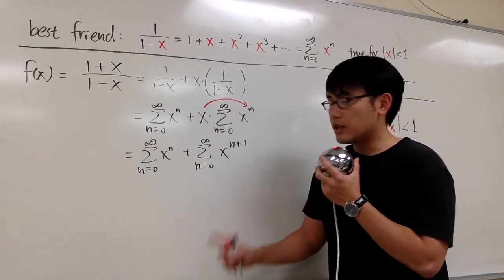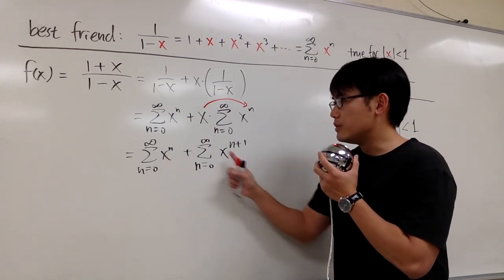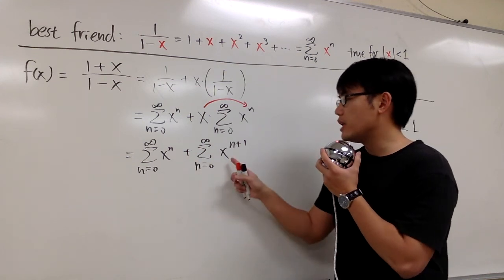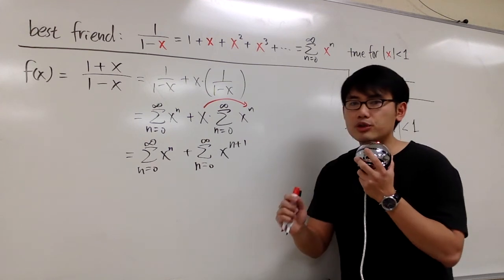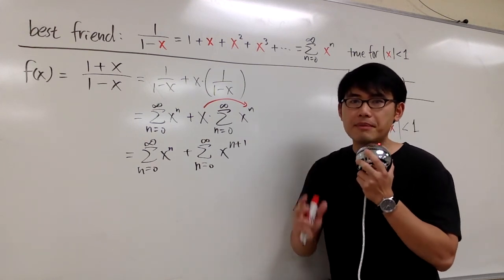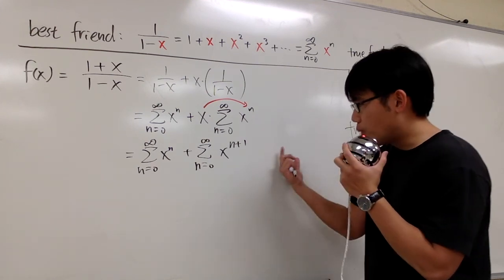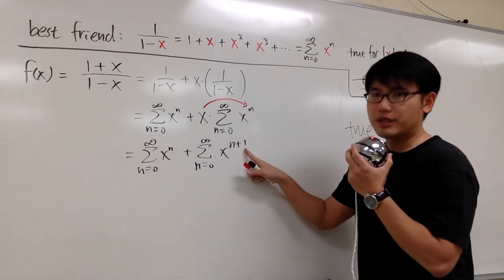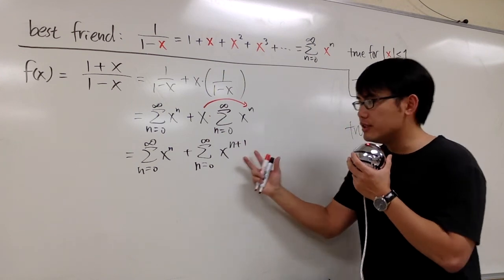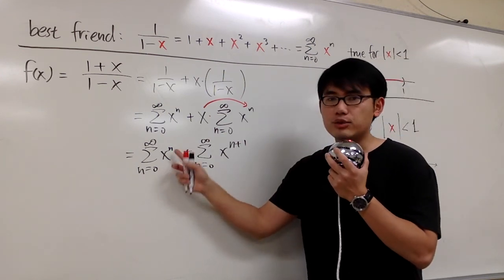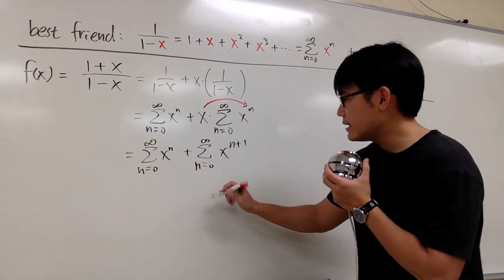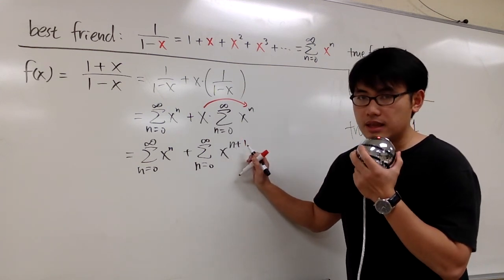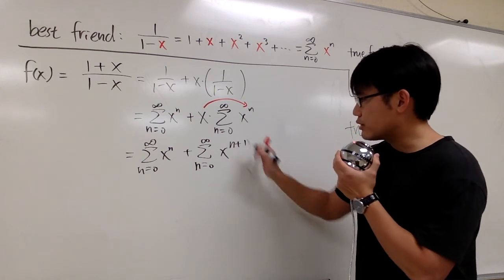The first thing is that we want to match the powers of x. Here we have x to the n power, and here we have x to the n plus 1 power. We must make sure both have the same power. One way to do it is to work with the bigger power — x to the n plus 1. I would like to match this to be x to the n, and to do that I can just subtract 1 from the n.